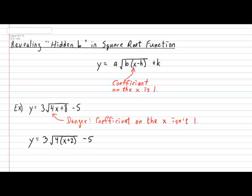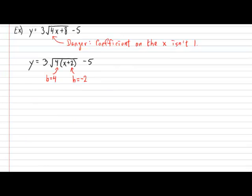Now following the factoring procedure, you can already see that the true value of B is 4, and more importantly, the true value of H is actually negative 2. But we're going to go just a little bit further and clean up our final rule using the properties of square roots. Which property am I referring to? I'm referring to the property of the square root of a product.